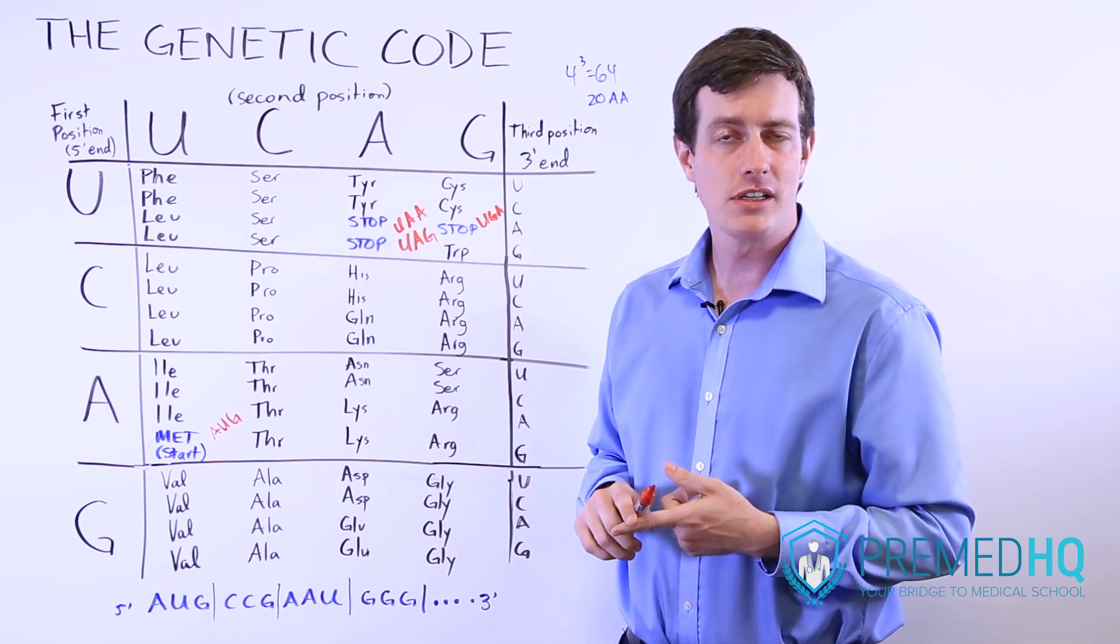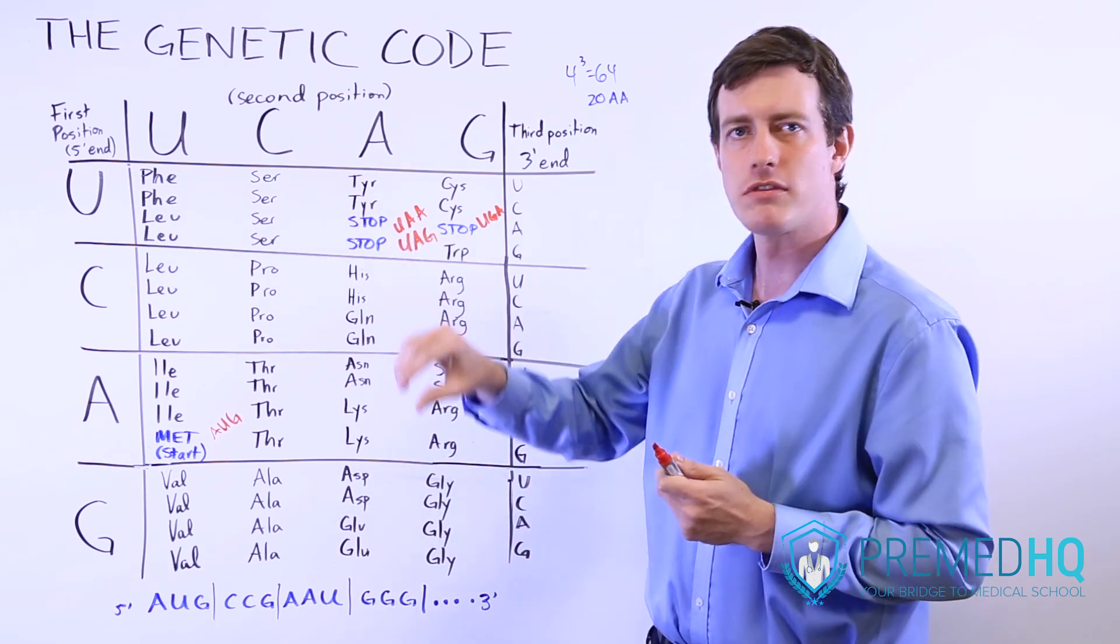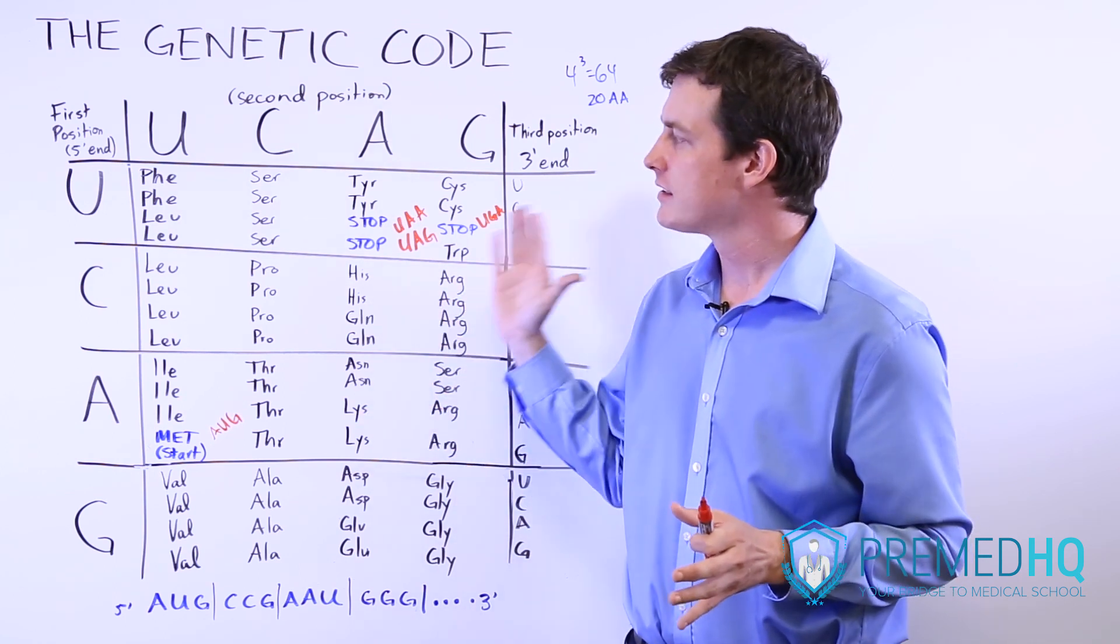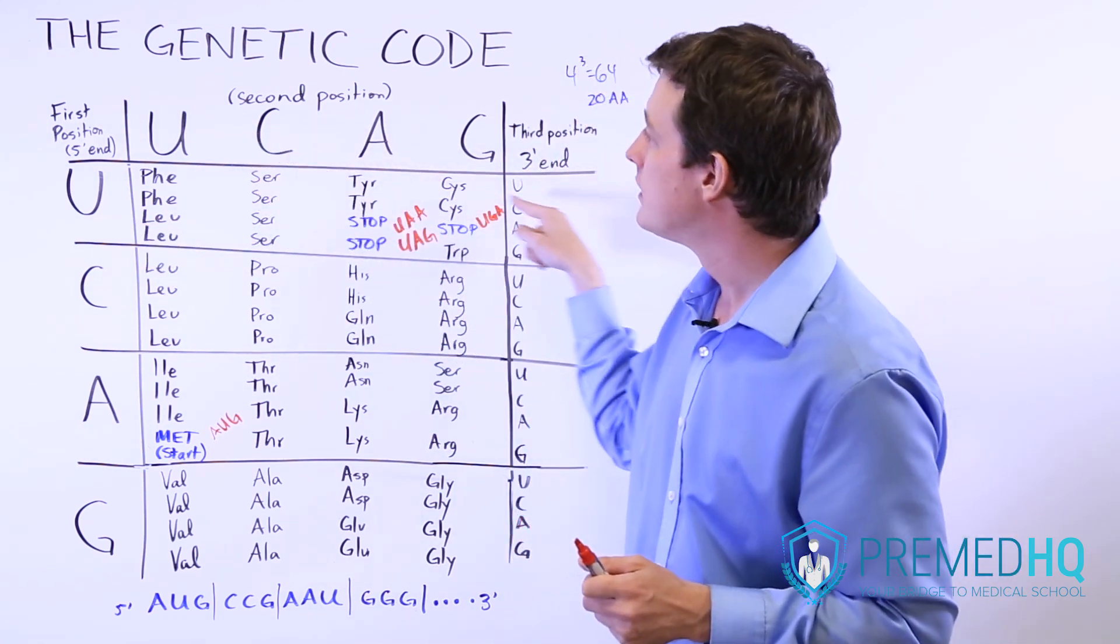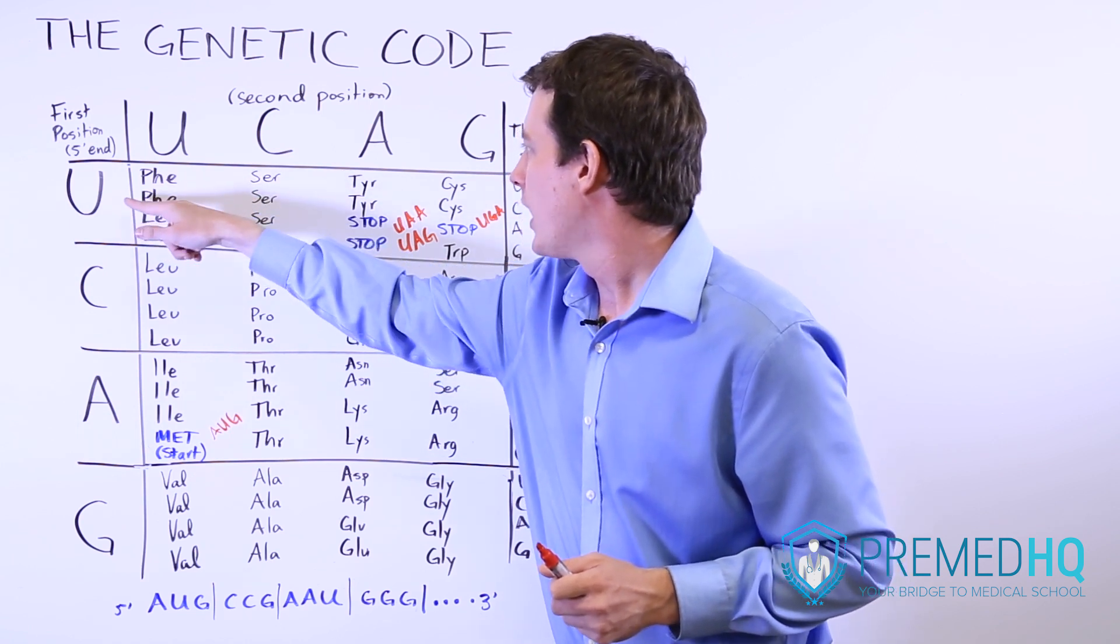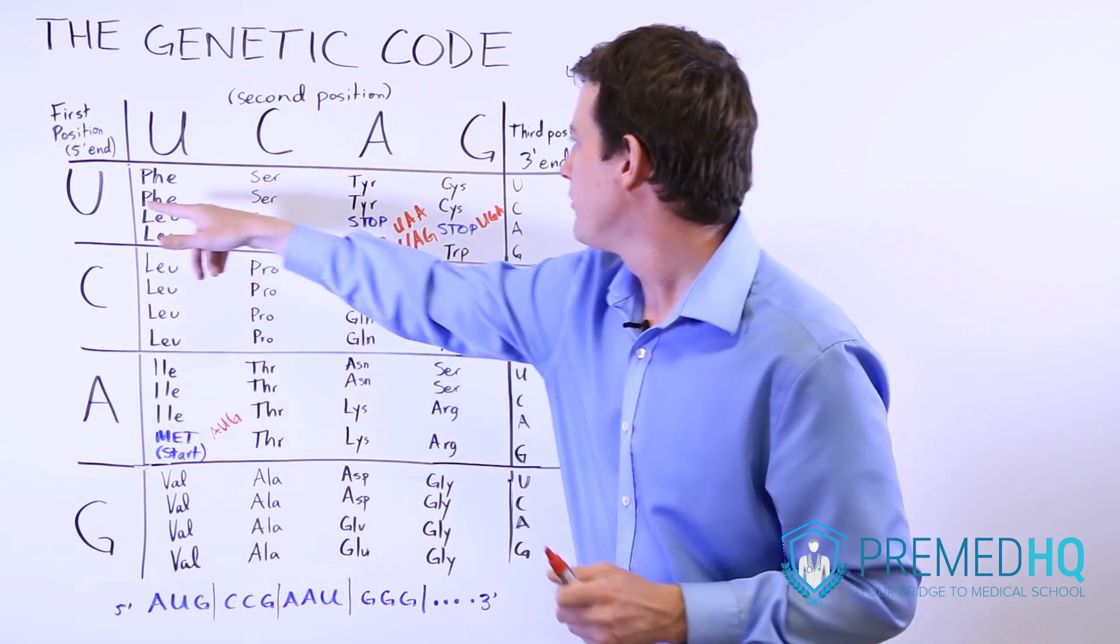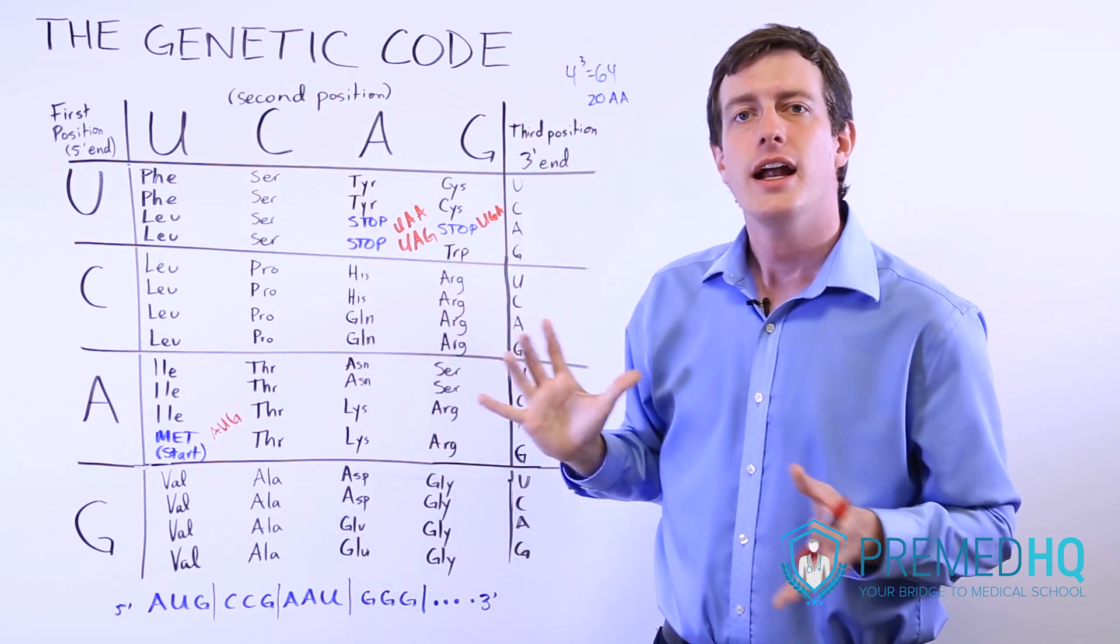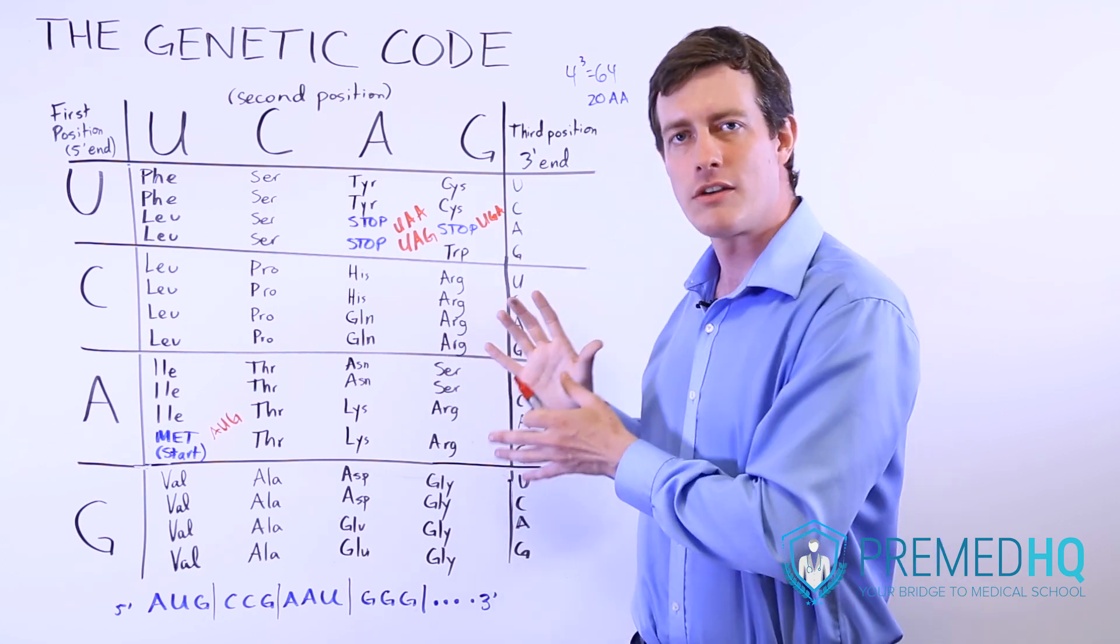One type of point mutation is known as a silent mutation. And what that means is that, yes, you've changed one of the bases, but it does not change the identity of the amino acid that is coded for. So, for example, you might have something like UUC, which codes for phenylalanine, and you could perhaps replace that UUC with a UUU, and then you'd have UUU, and that would still encode for phenylalanine.